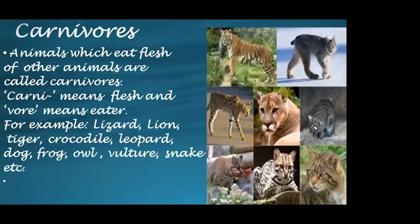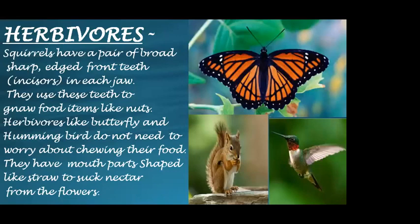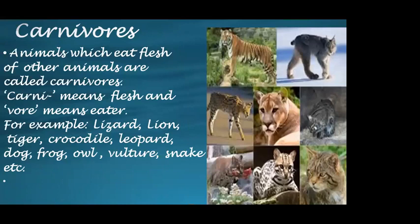Now let's talk about carnivores. Animals which eat the flesh of other animals are called carnivores. The term 'carni' means flesh and 'vor' means eater. Examples of carnivorous animals are lion, tiger, leopard, crocodile, lizard, vulture, owl, wolf, etc.